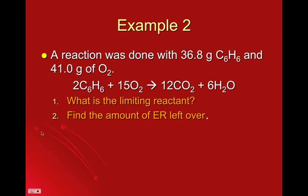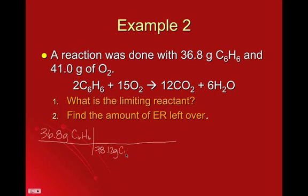So first limiting reactant. So 36.8 grams C6H6, we're going to convert that to mass or moles of a product, and I'll go ahead and convert it to CO2 since that's what's first. C6H6 has a molar mass of 78.12 grams of benzene per mole, and our mole ratio is 2 to 12. And we can stop right there.